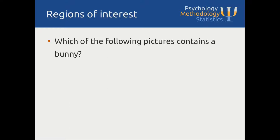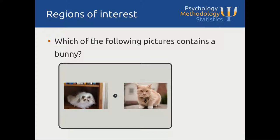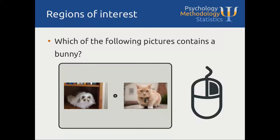So about regions of interest. Imagine the following task where you ask your participants which of the following pictures contains a bunny. You show participants a display with a fixation dot, a target stimulus containing a bunny, and a distractor stimulus containing a cat, and you ask participants to respond by using the mouse — more precisely, to click on the image which they think contains a bunny. As a researcher, you are most interested in mouse clicks on the target or on the distractor, and not in mouse clicks on an empty part of the display — the grey area. You might even want to ignore those clicks and force participants to click on a relevant part of the display. These relevant parts are called regions of interest.